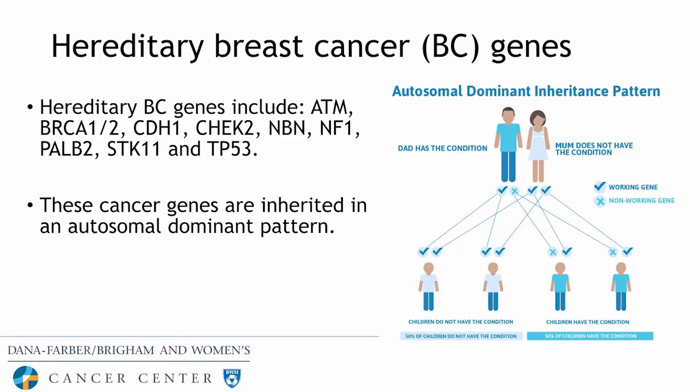In 2019, there are about 10 hereditary breast cancer genes: ATM, BRCA1, BRCA2, CDH1, CHEK2, NBN, NF1, PALB2, STK11, and TP53. These cancer genes are inherited in an autosomal dominant pattern, which means that if an individual's mother or father has a hereditary cancer gene, then the individual has a 50% chance of having that gene too.